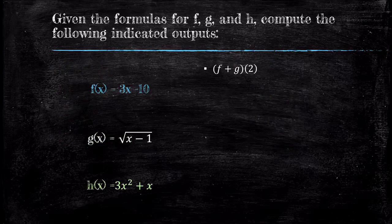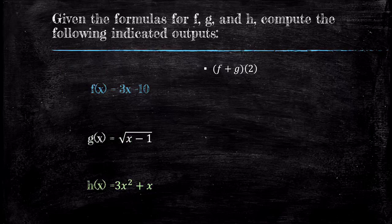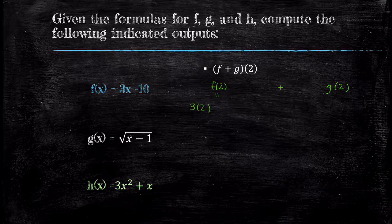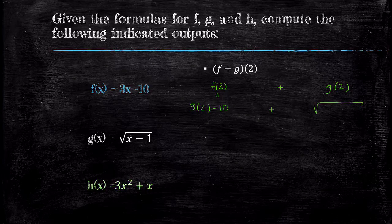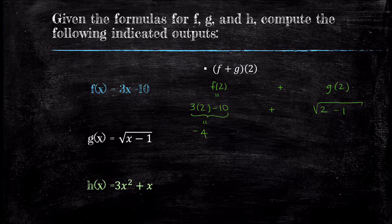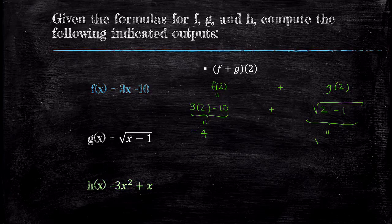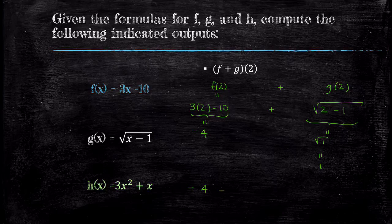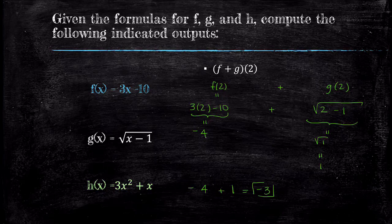First example. Let f(x) = 3x - 10, g(x) = √(x - 1), and h(x) = 3x² + x. For this first problem, we're working with f + g and input 2. The easiest way to compute this is f(2) + g(2). To compute f(2), we plug 2 into our formula: 3(2) - 10. Following PEMDAS, we get negative 4. To compute g(2), we plug 2 into g: √(2 - 1) = √1 = 1. Now f + g of 2 is negative 4 plus 1, which equals negative 3.